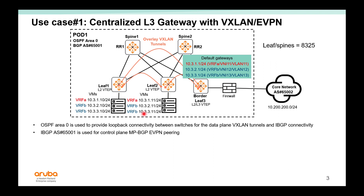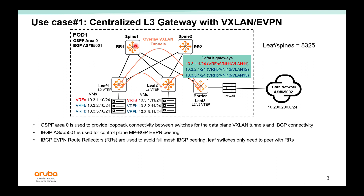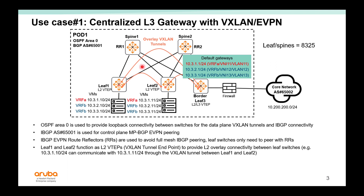IBGP is used for EVPN peering — that's the control plane for the VXLAN tunnels. The spine switches will be configured as EVPN route reflectors, so that the leaf switches do not need to have a full mesh IBGP peering between all of them; the leaf switches only need to peer with the route reflectors. Leaf 1 and leaf 2 function as layer 2 VTEPs to provide layer 2 connectivity between the leaf switches. For example, 1.10 and 1.11, because they are on the same subnet, can communicate through this tunnel directly between the leaf switches.